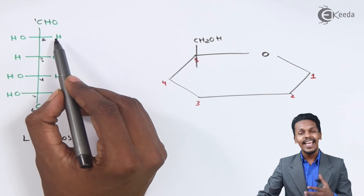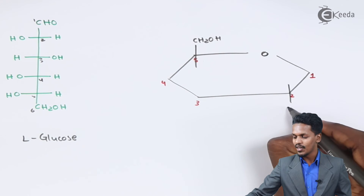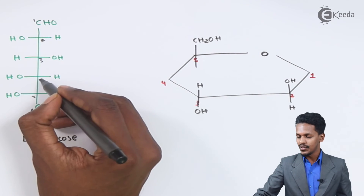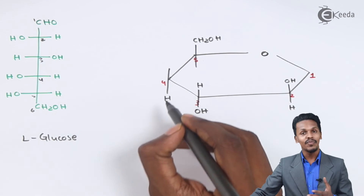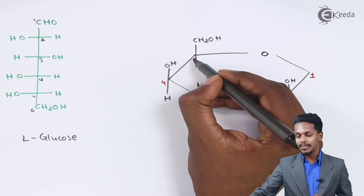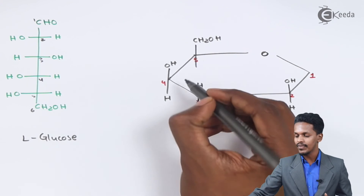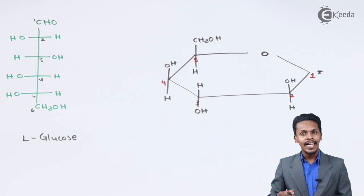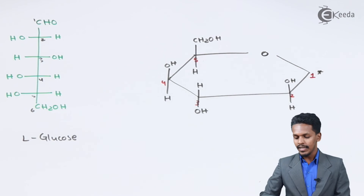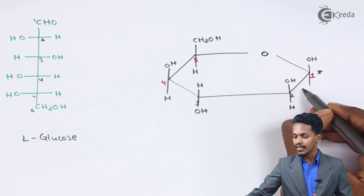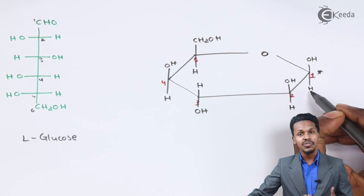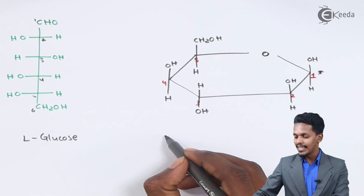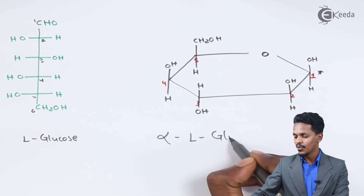For L-glucose: the second carbon has H on the right, so H goes downward in Haworth and OH goes up. On the third carbon, OH is on the right, so OH goes downward. On the fourth carbon, H is on the right, so H goes downward. The fifth carbon carries CH₂OH, and carbon 1 is the anomeric carbon determining alpha or beta.